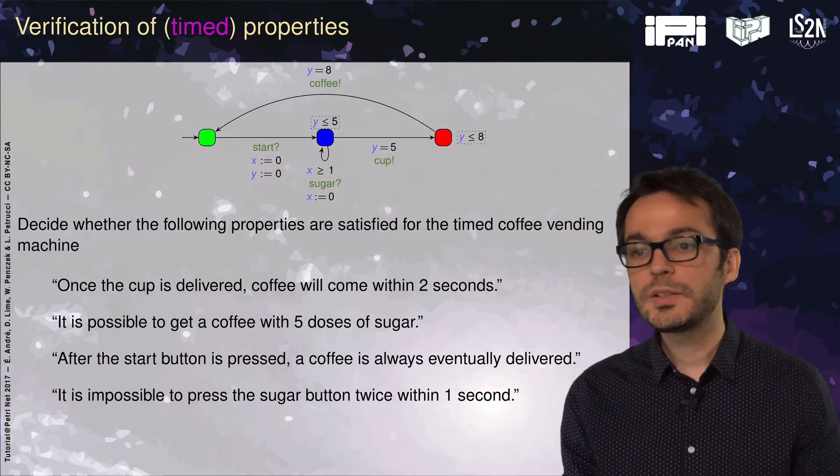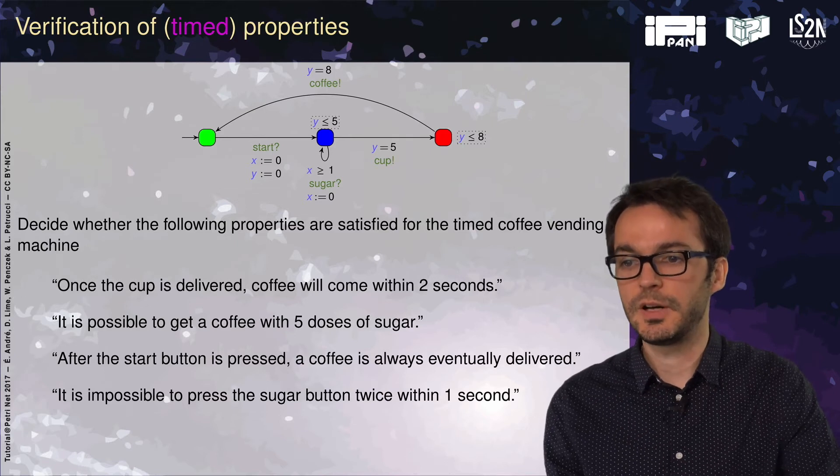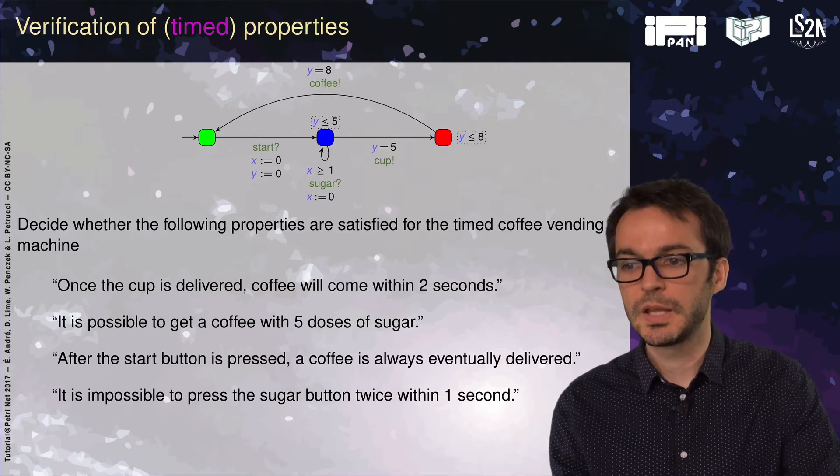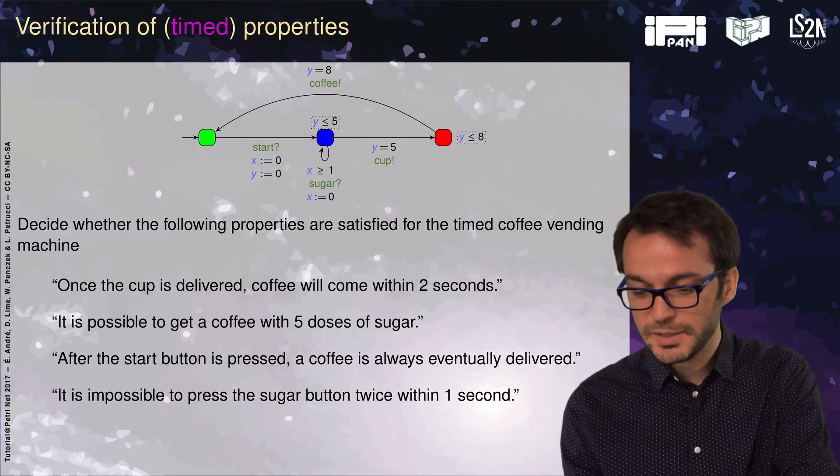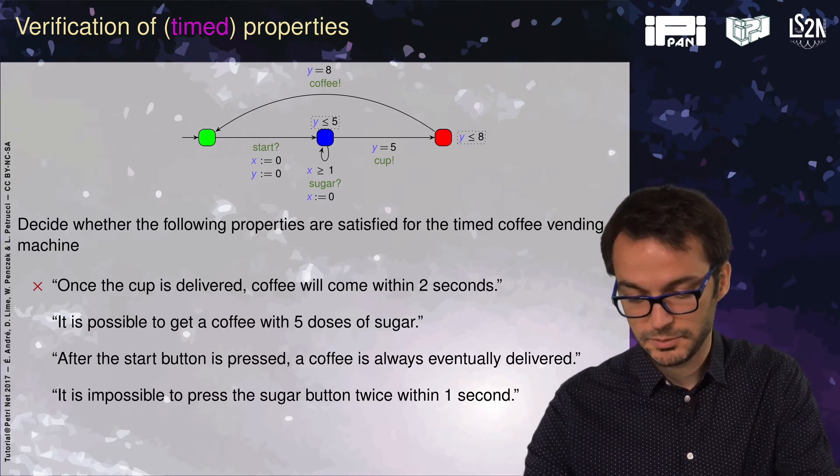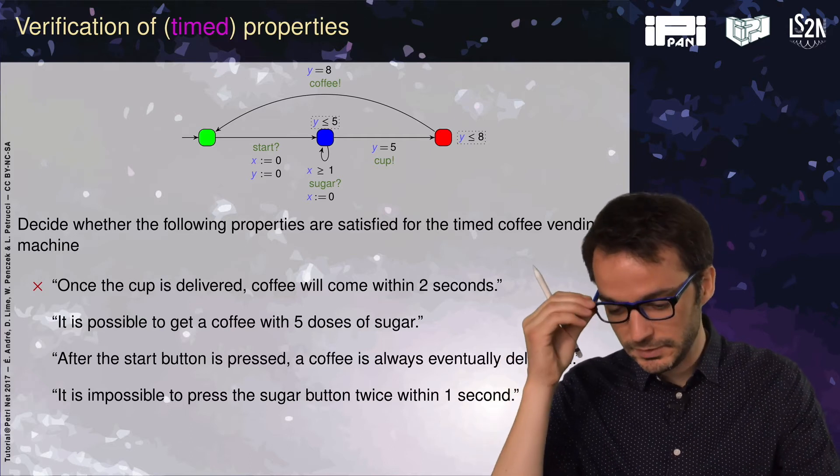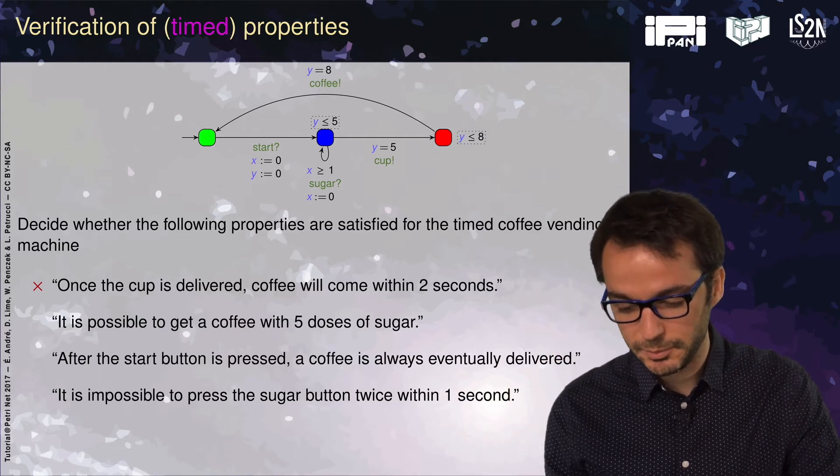What kind of properties can we verify in a timed automaton? For instance, we can ask once the cup is delivered, coffee will come within two seconds. Here the property is not satisfied. We have to wait three time units.